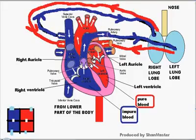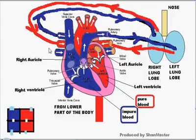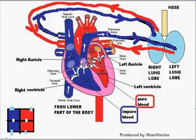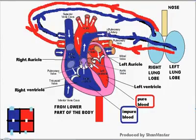Blood always flows into the heart when it is coming from the veins. When it comes to the heart, it flows into the auricles only. When it flows out of the heart, it flows out through the ventricles. From the right ventricle, it flows into the pulmonary artery. Arteries carry blood away from the heart; veins carry blood towards the heart.